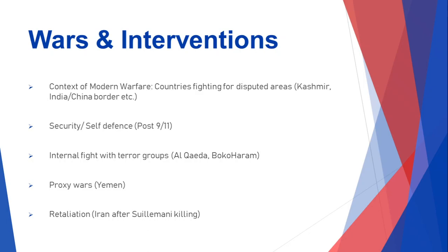There are also cases where certain countries retaliate to specific situations — not all too common, but it happens in specific scenarios. For example, after Iran's General Qasem Soleimani was killed, they promised revenge and carried out attacks in Syria targeting actors they felt were involved in the killing. This isn't all too common, but it's worth noting as a context for warfare. The first four types — disputed territory, security/self-defense, terror group conflicts, and proxy wars — are the main causes of warfare or interventions in the modern scenario.